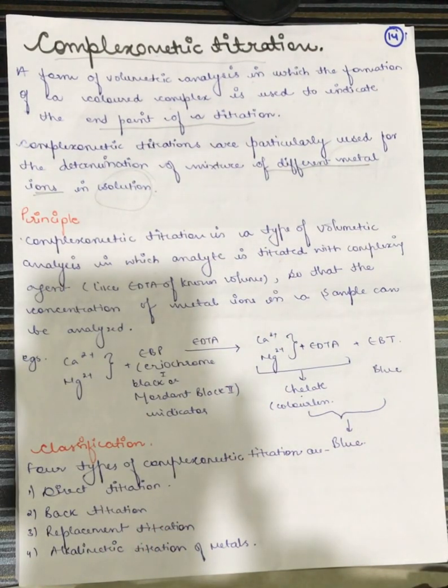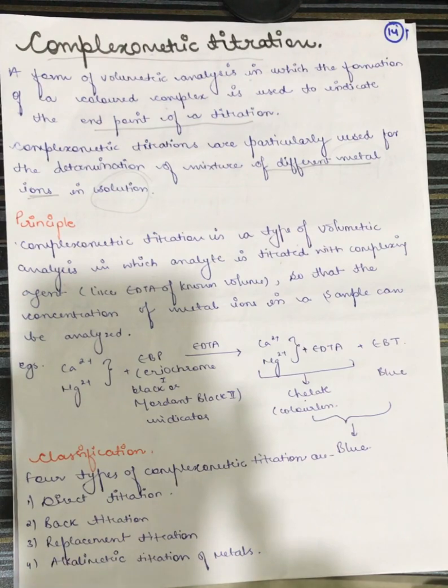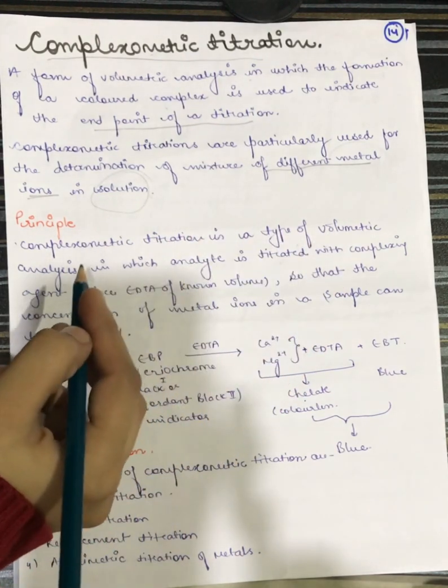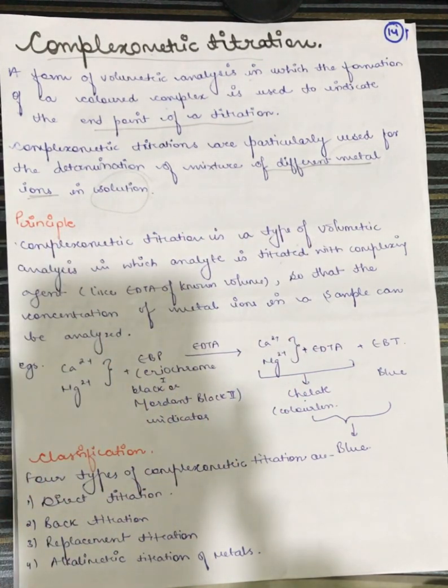Now, let's see what is the principle behind complexometric titration. Complexometric titration is a type of volumetric analysis. I mean, what we will perform in titration in complexometry, it will be depending upon the volumetric analysis. Ultimately, what we will find out is the concentration of our unknown solution present, which is our metal ions present.